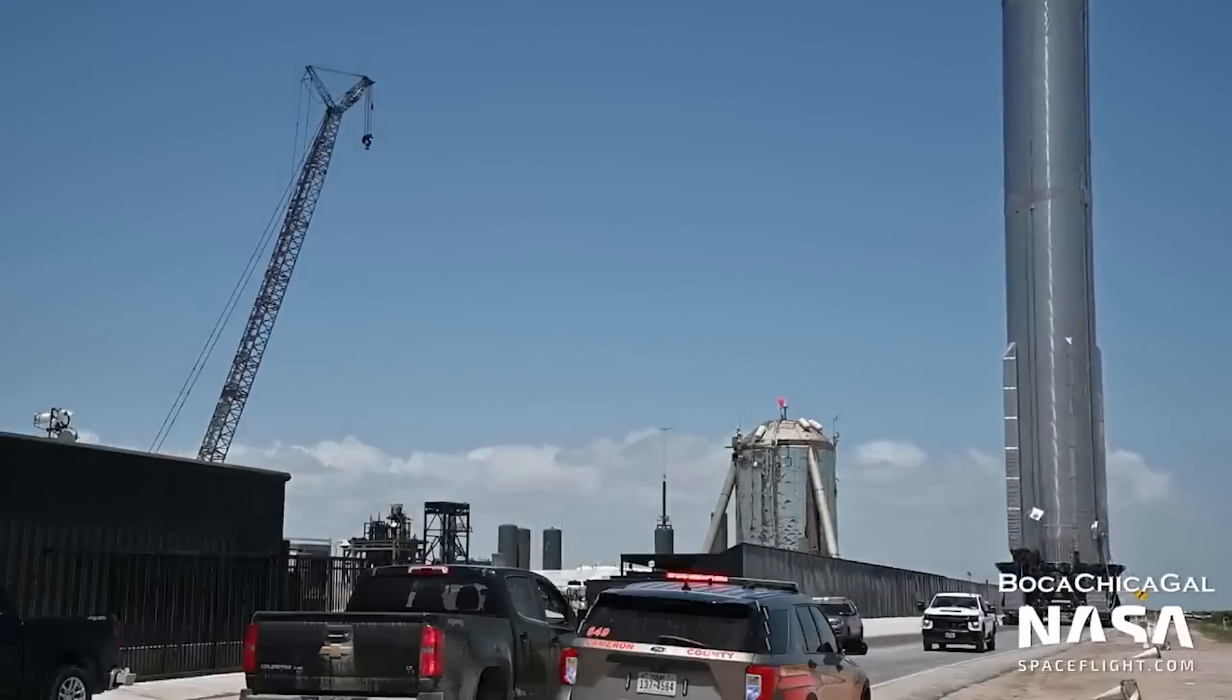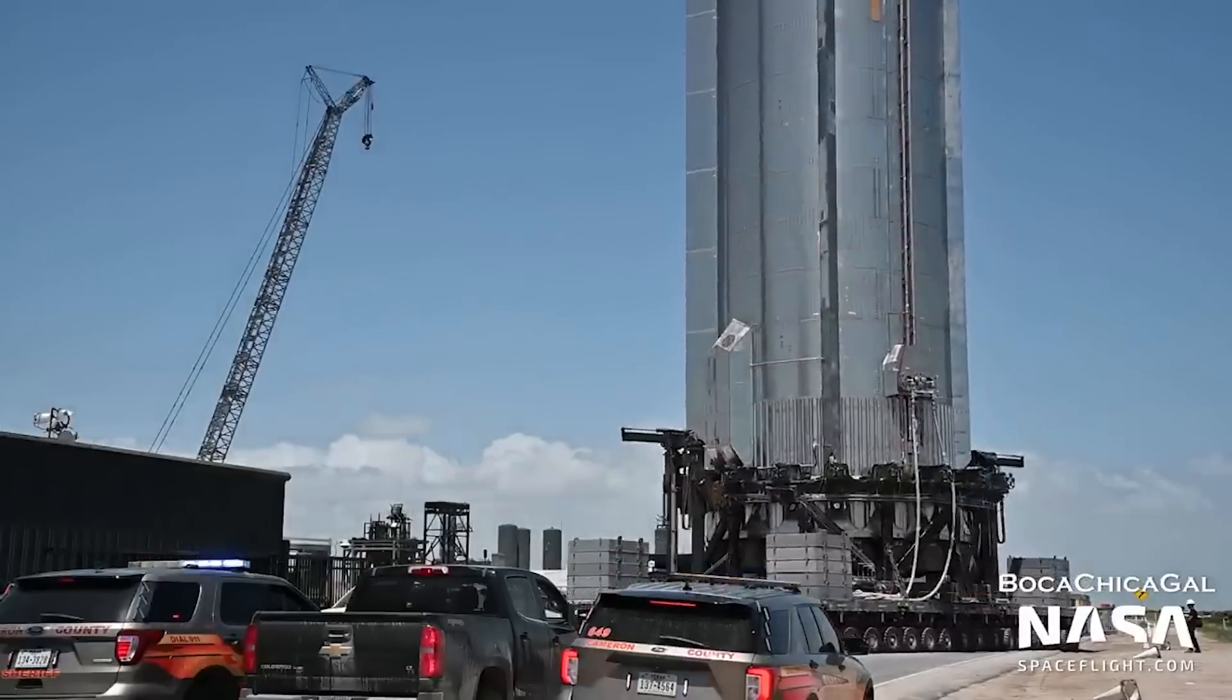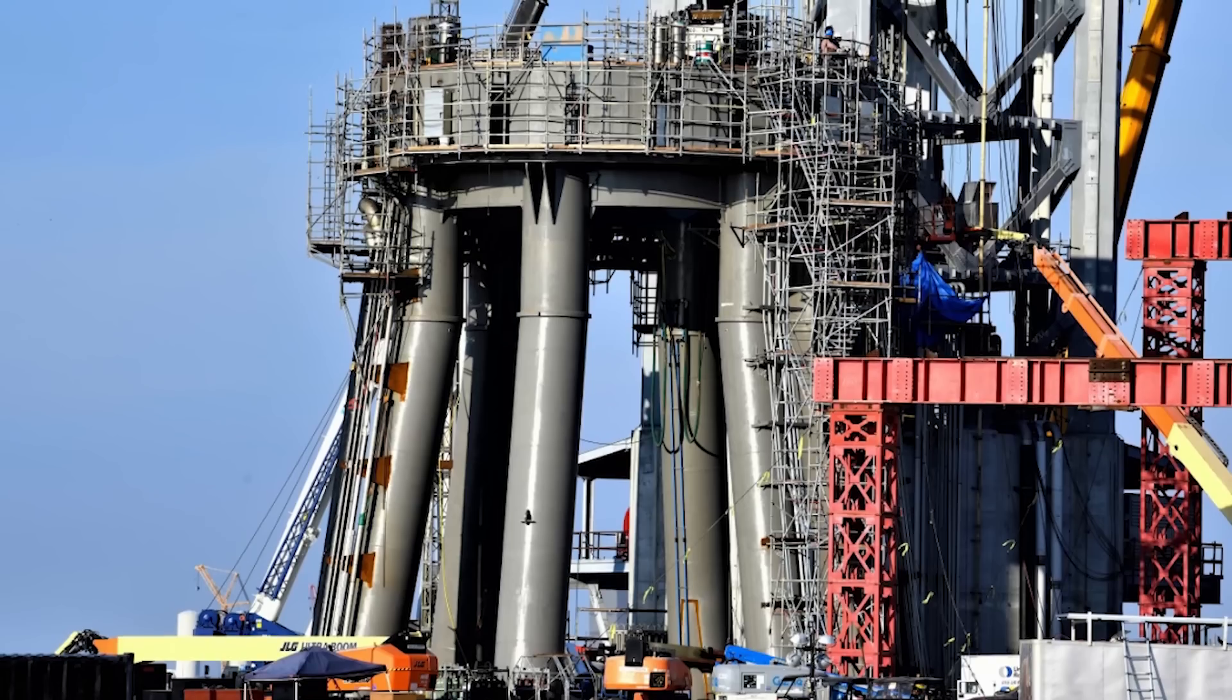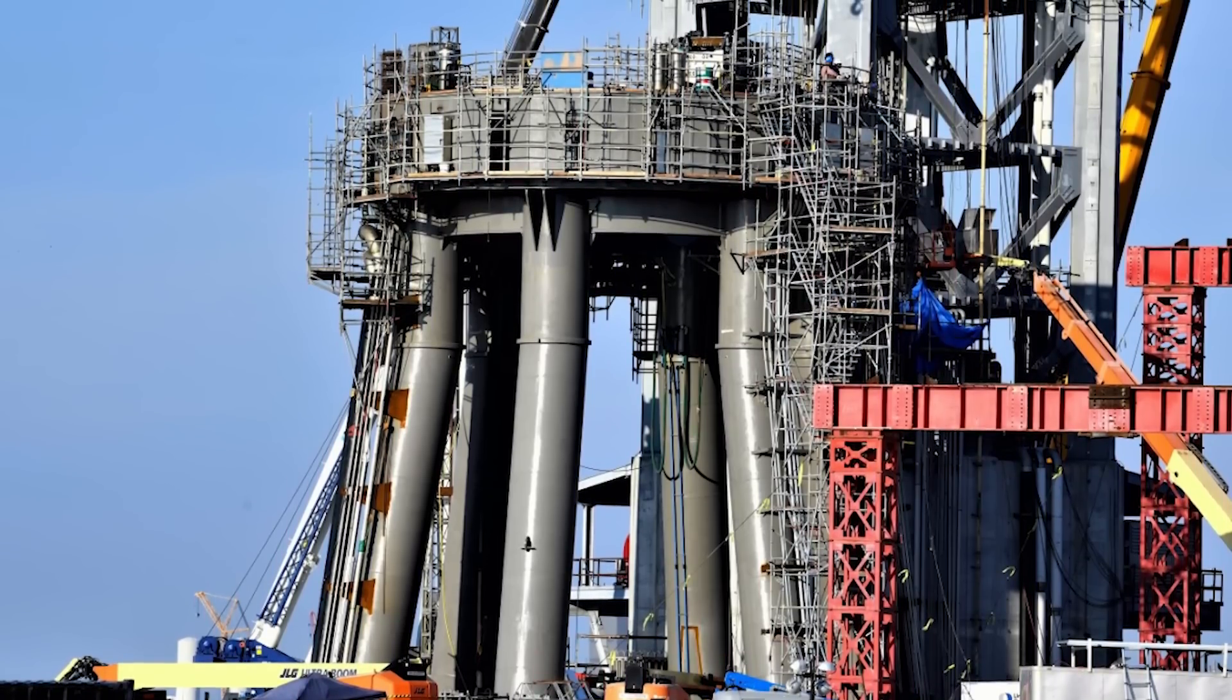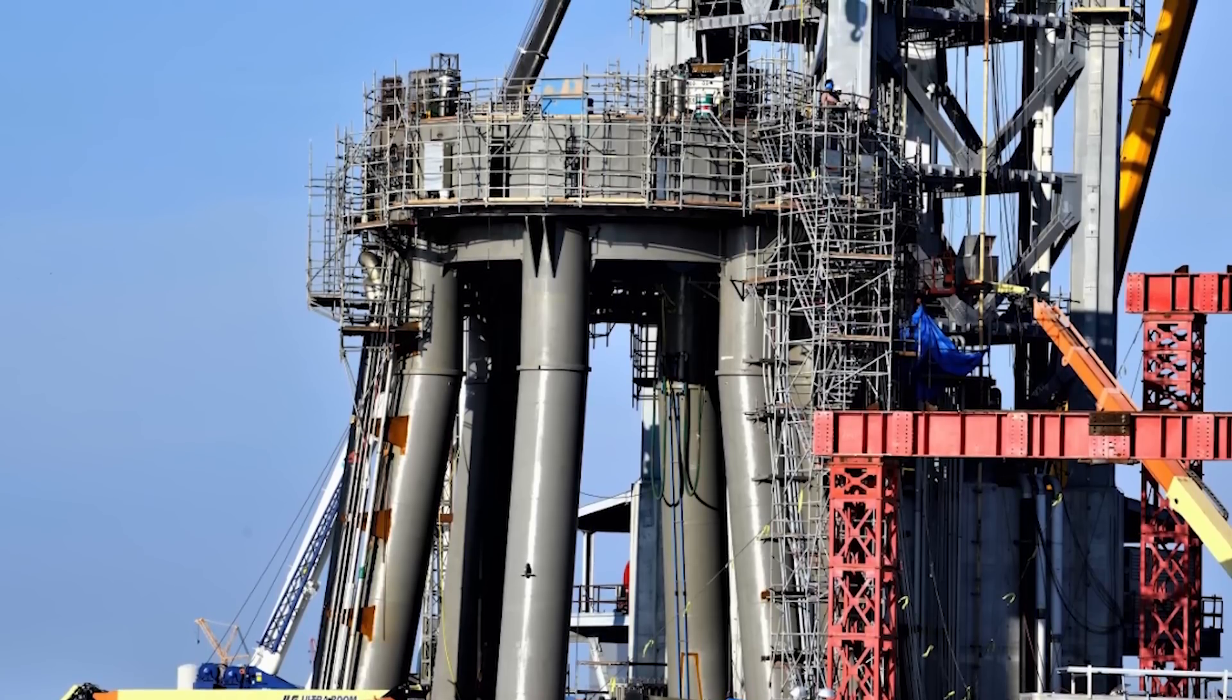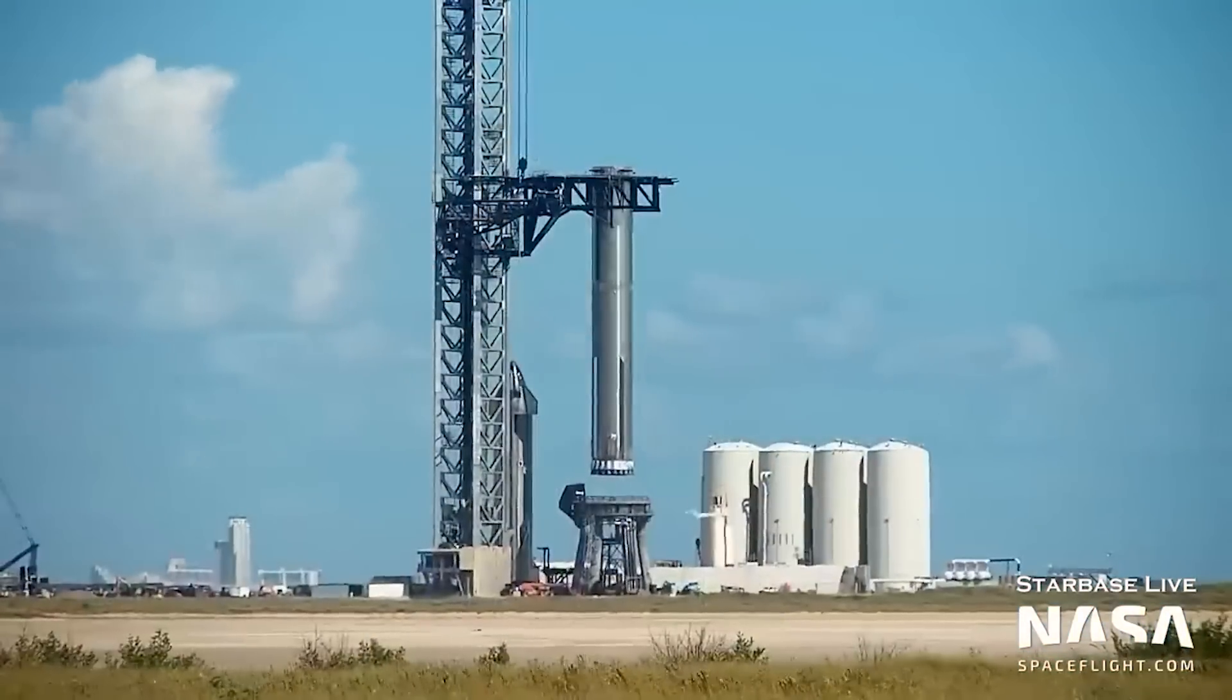So, on October 10th, when Booster 7 was once again rolled out of the wide bay for another test, it looked like that big burn was the purpose. The launch mount's hold-down clamps, which secure the booster to the mount, were modified the week previously to help contain larger engine blasts, and they completed a brief release test before Booster 7 was moved onto the mount.